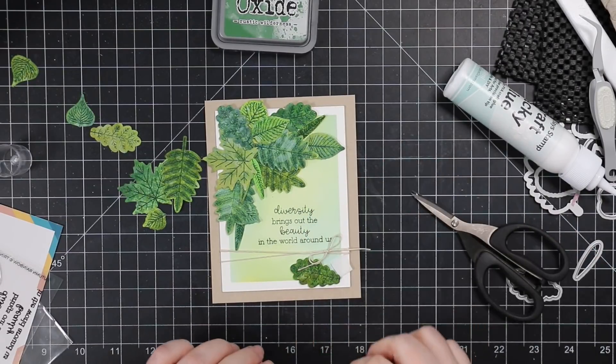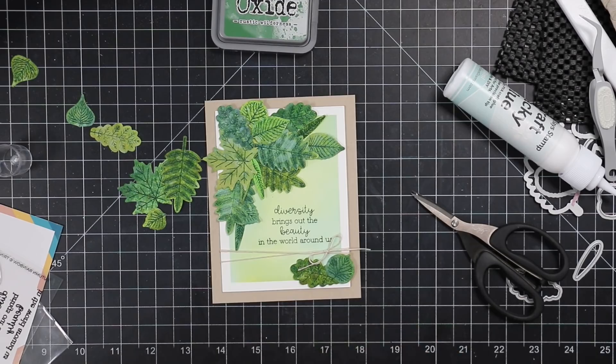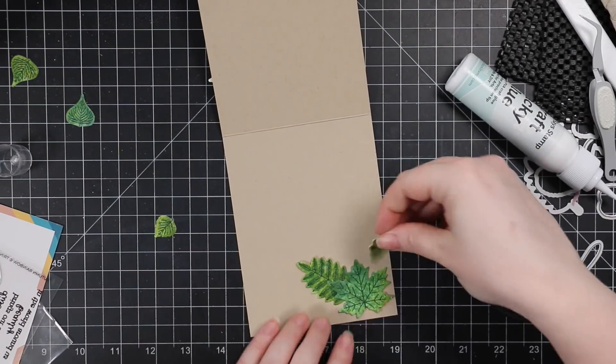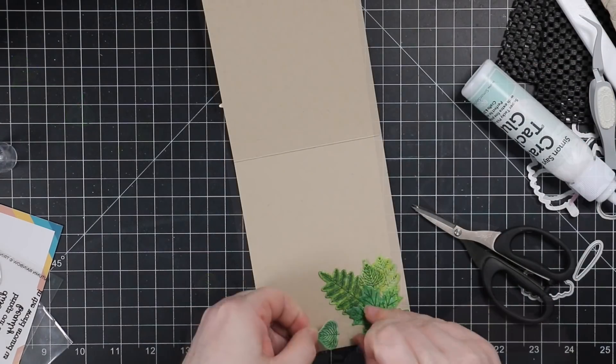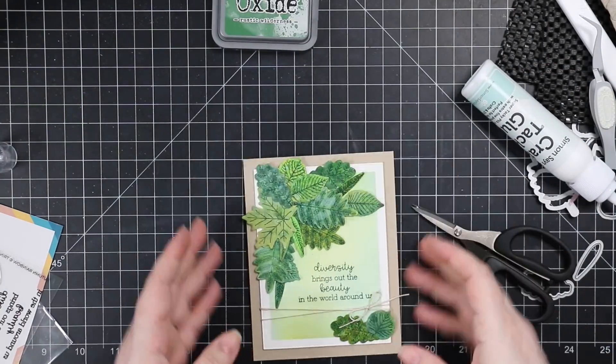So added a couple more leaves to the bottom corner. And then I'm going to add the remainder of the leaves to the inside of the card. Cause you can't leave the inside blank. Just, it needs a little something. So I just added what was left of those leaves onto the inside of the card.